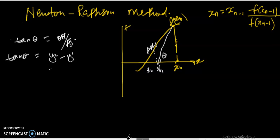That therefore means that tan θ is equal to y₂ minus y₁, equation of the straight line, divided by x₀ minus x₁. If you do a simple simplification, you will simply have f'(x₀), and this will be equal to f(x₀) minus 0 divided by x₀ minus x₁.